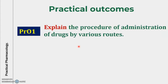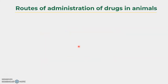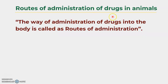What are the practical outcomes after completion? Students should be able to explain the procedure of administration of drugs by various routes and choose the correct site for administration. We can find out what are the different routes and the definition of routes of administration. The way of administration of drugs into the body is called routes of administration. Please pause this video and write this definition in your notebook.